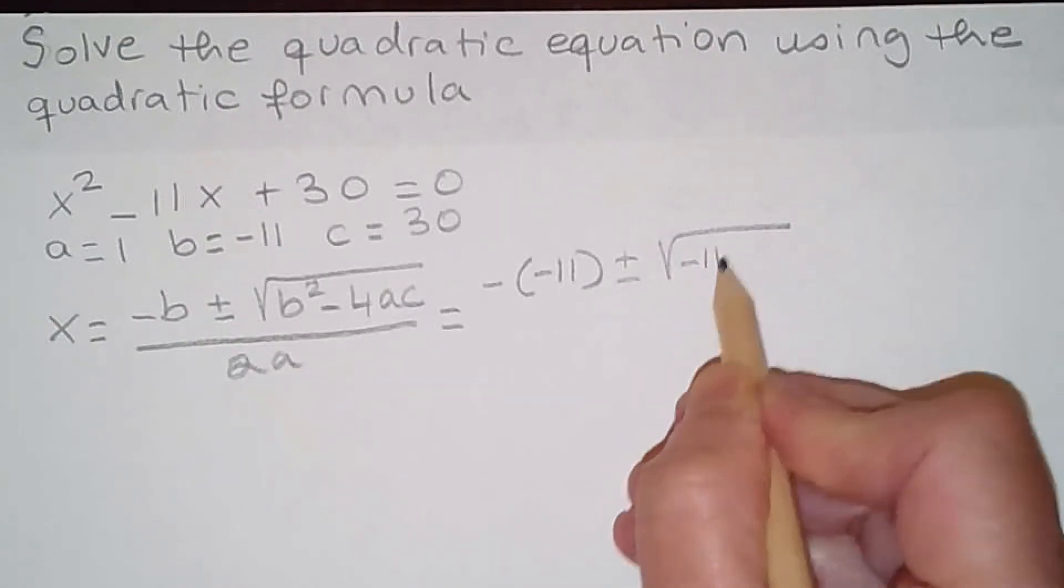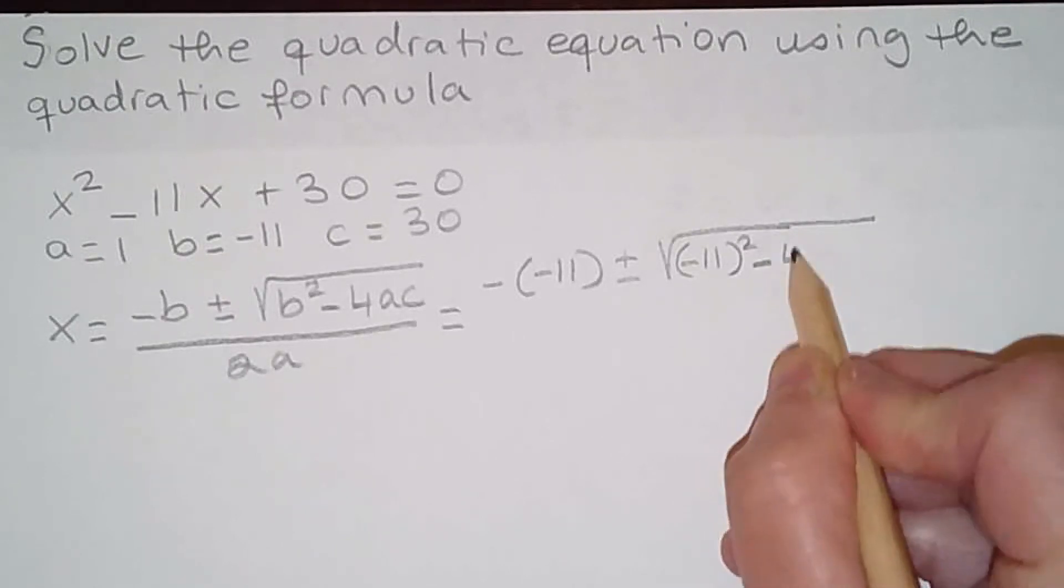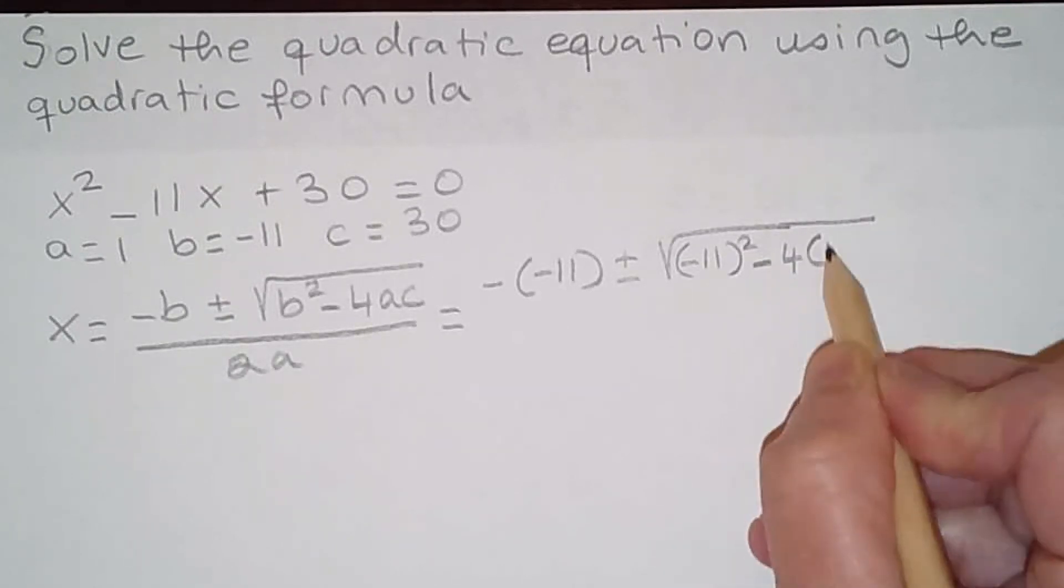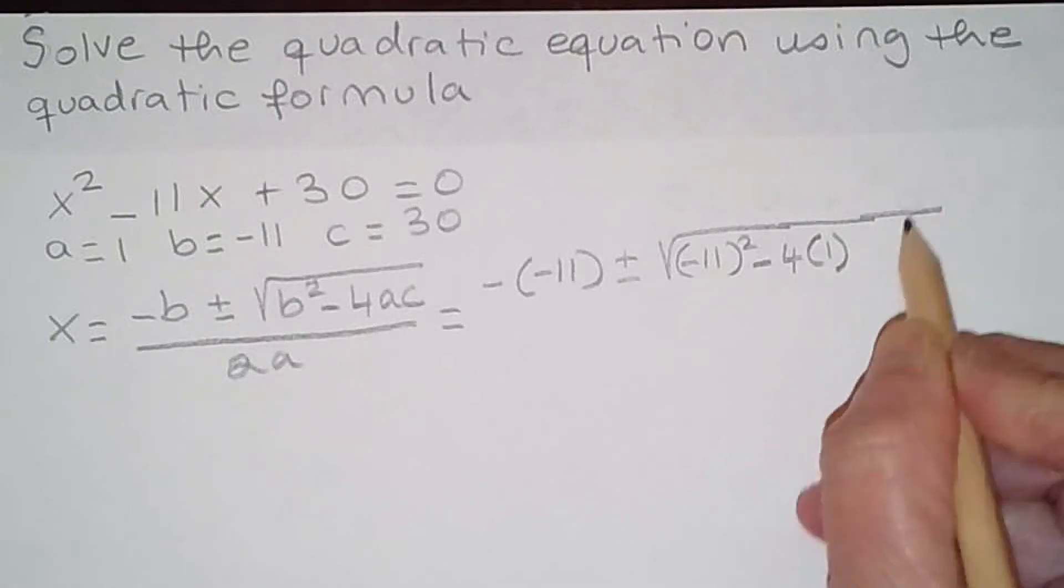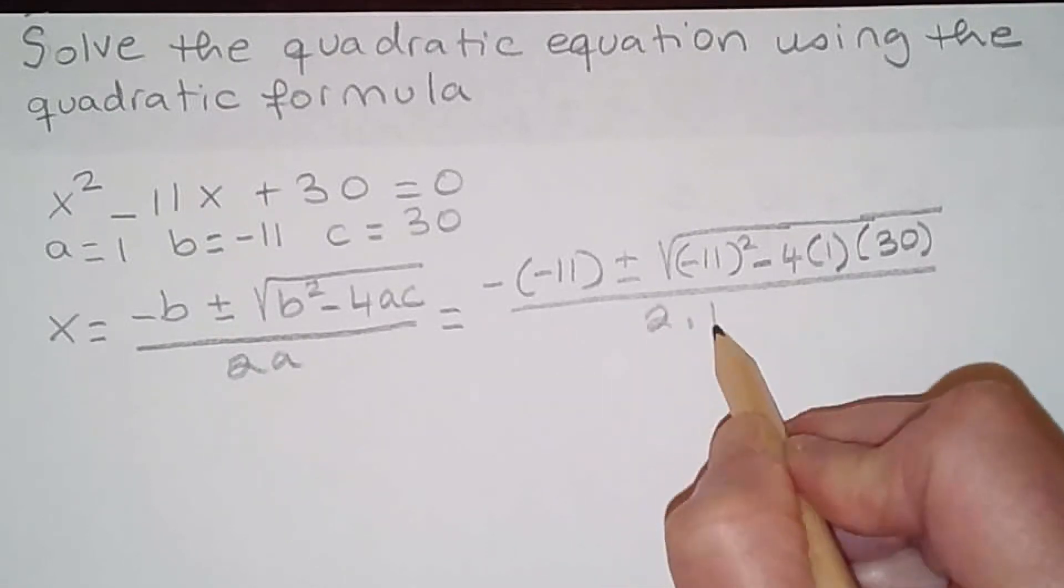...minus 4 times a is 1 in this case, times c, c is 30, over 2 times a, that's 2 times 1.